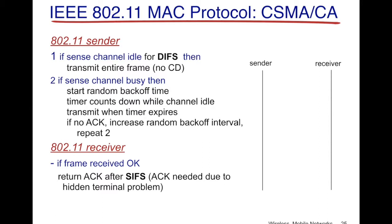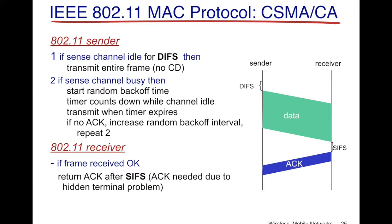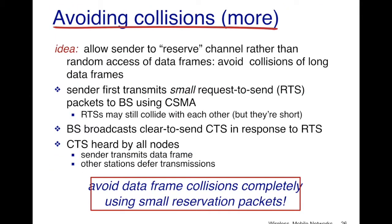In CSMA/CA, the 802.11 sender works as follows: if the channel is idle for a DIFS — a small sensing period — it can transmit the entire frame. If the channel is busy, it backs off for a certain period of time and checks again. At the receiver, if the frame is received correctly, it returns an acknowledgement after a SIFS — another short duration — to ensure no collisions occur. So the sender waits for the DIFS, sends the data, the receiver waits for SIFS, then sends back the acknowledgement.